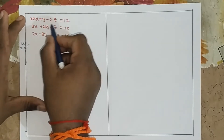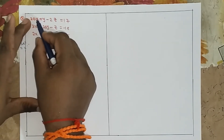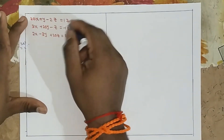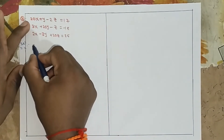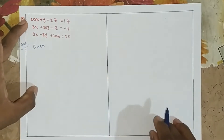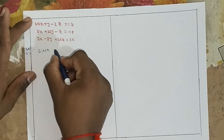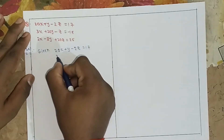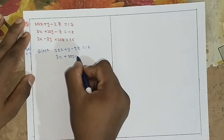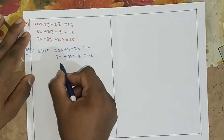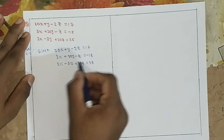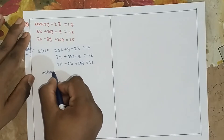We have the system: 20x plus y minus 2z equals 70, and other equations. Since the diagonal element 20 is greater than or equal to 80, this system is diagonally dominant. So we choose this diagonally dominant form to start. The given system has three equations: 2z equals 17, 3x plus 20y minus z equals minus 18, and 2x minus 3y plus 20z equals 25.